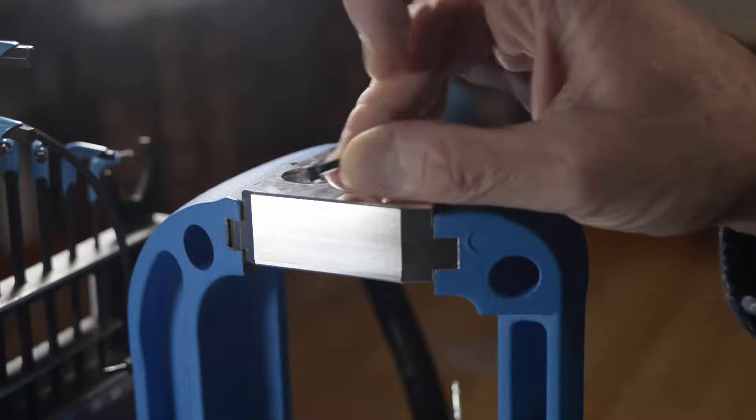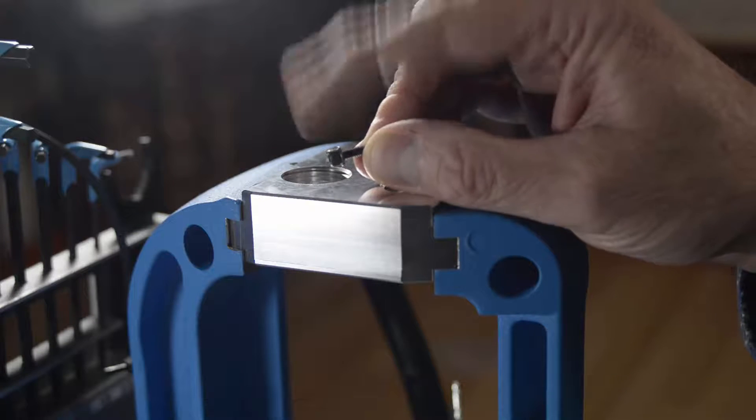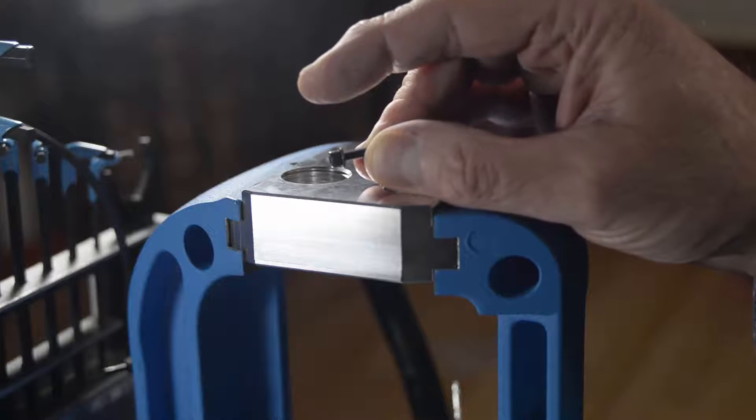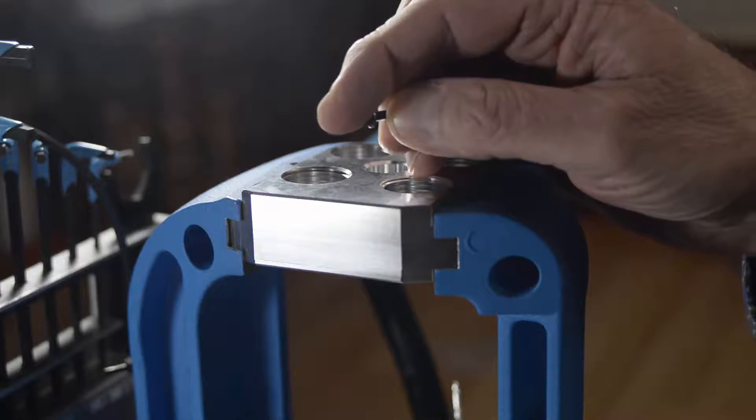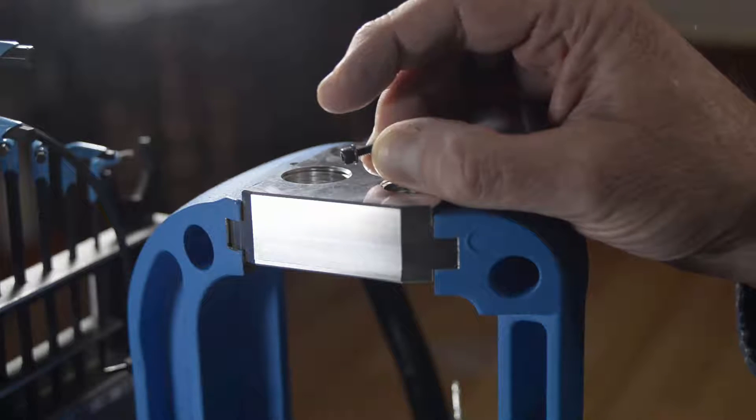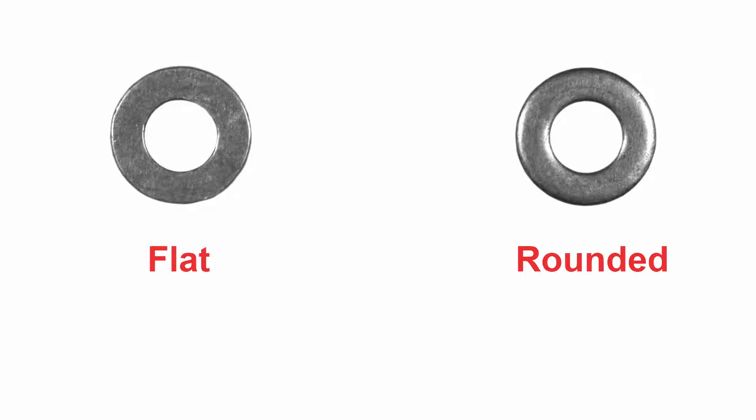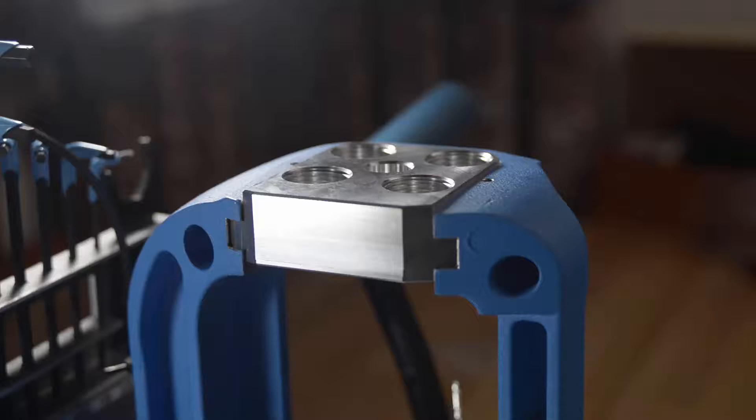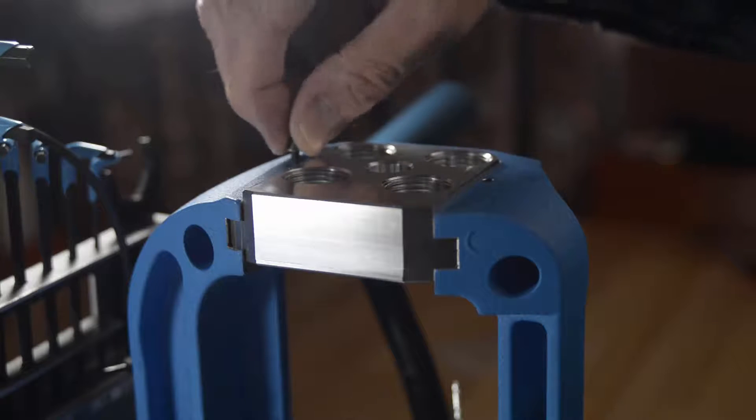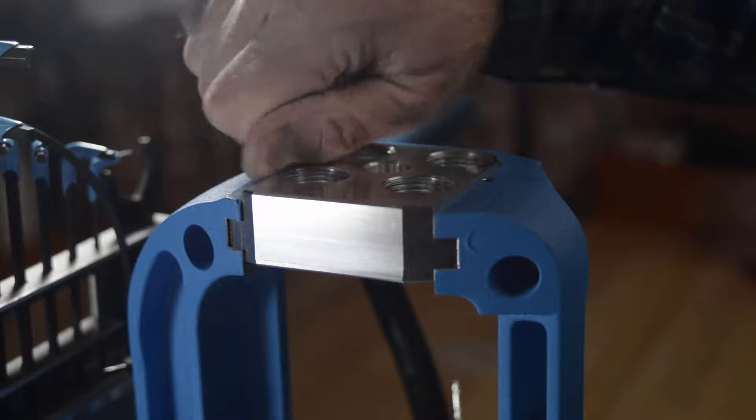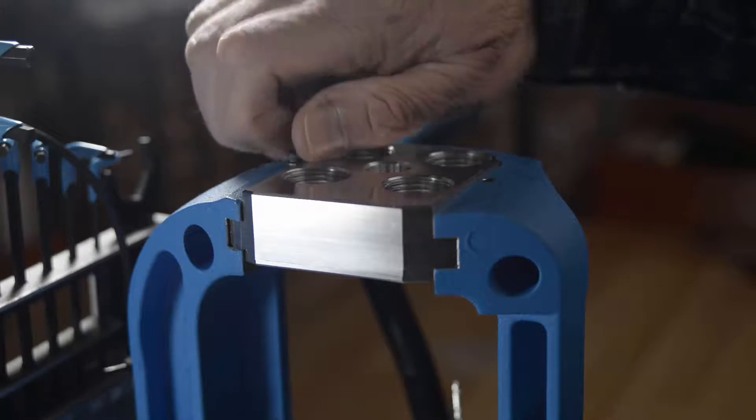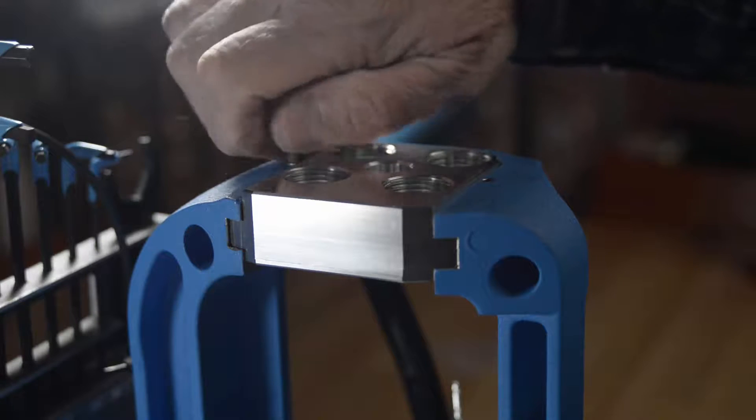You want to place the washers on the screws. You want to be sure the rounded surface of the washer is against the screw head. Let's take a close look at the rounded and flat surfaces of the washer. You want to screw the screws in until the screw head makes contact with the press. Don't use the Allen key, just do it gently.